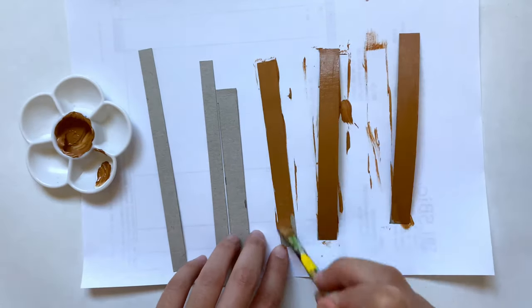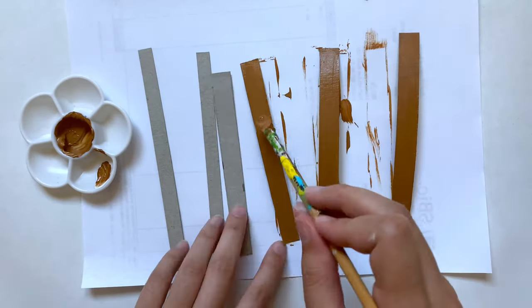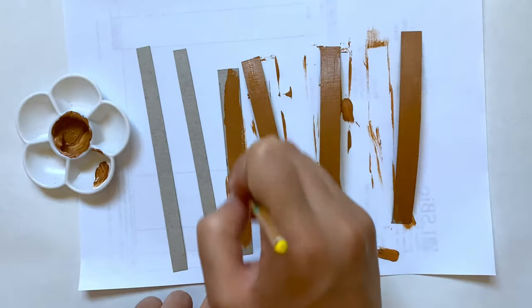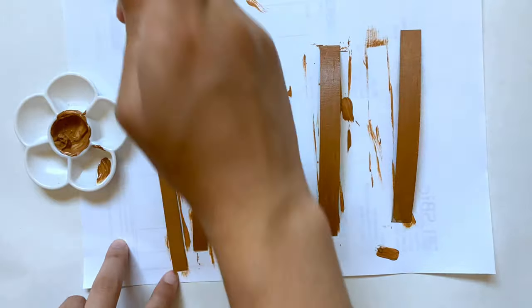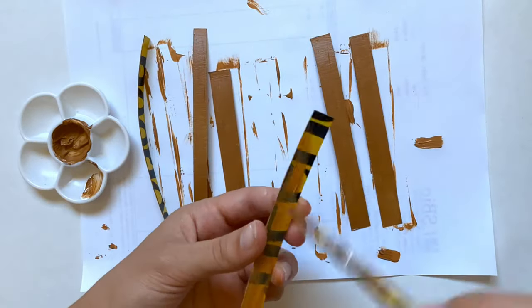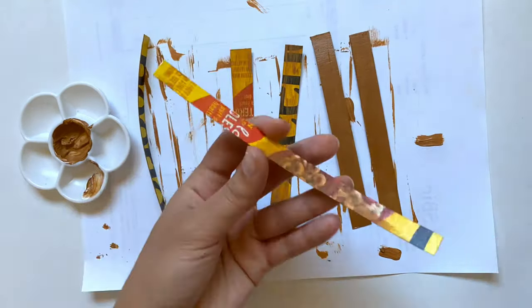This is where you can get really creative and make whatever style sandal you want. Instead of doing two thin bands, you could do one thick band and paint it whatever color you want. I was thinking of making something like this and making it pink, so you can really do whatever you want here. But I'm going with more of a beachy neutral look.